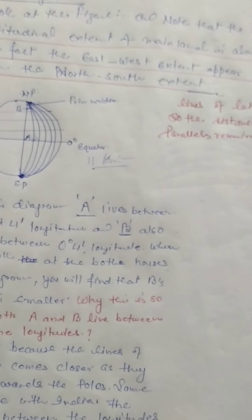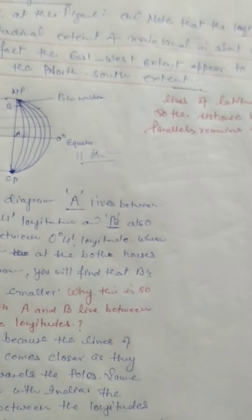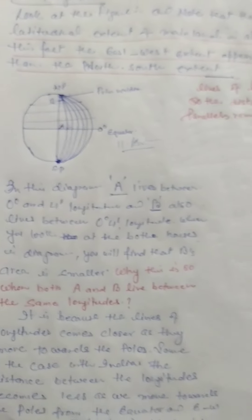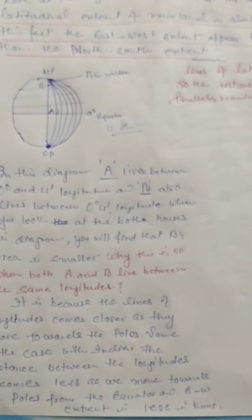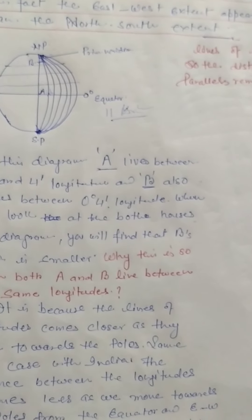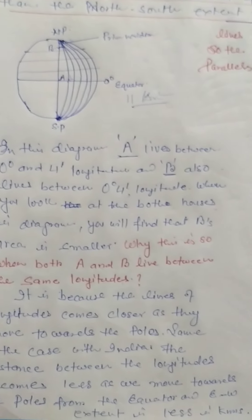That's why the east-west extent appears to be smaller than the north-south extent. I think you have understood the reason.